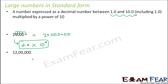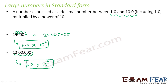Let's look at one more example. Say you have 12 lakhs. The decimal point is at the end. We want to shift it somewhere so that we get a decimal number between 1 and 10. We shift it to get 1.2, and then multiply by a power of 10. The power equals the number of jumps taken: 1, 2, 3, 4, 5, 6. So this is 1.2 × 10⁶.